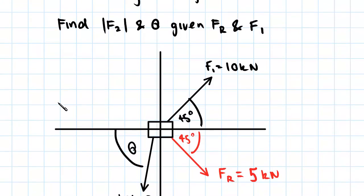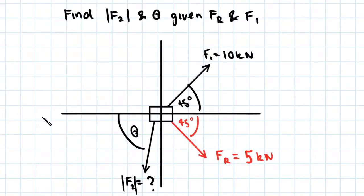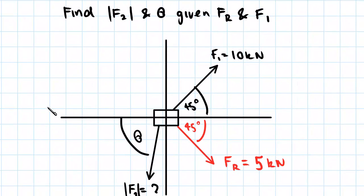So what we've been given to help us do this is we have the resultant force. So we know that when you add F1 and F2, which we don't know, when we add those two forces together we end up with a resultant force of 5 kilonewtons in this direction here.